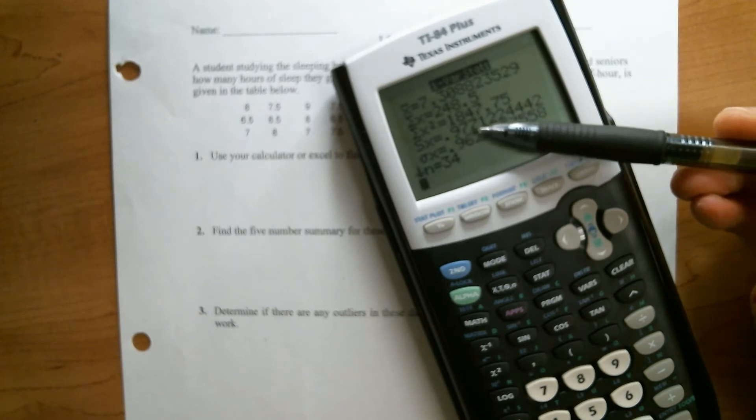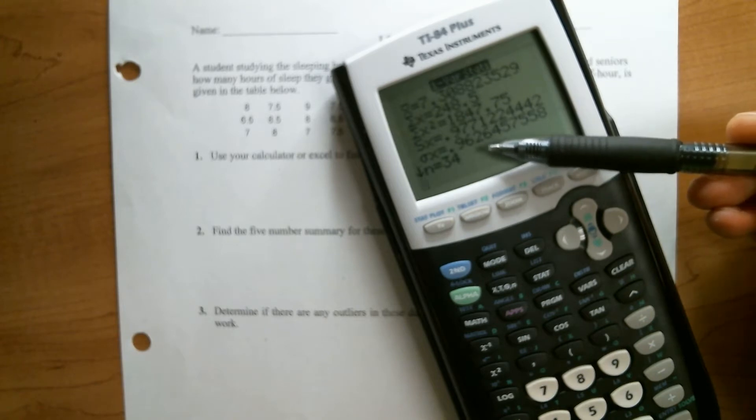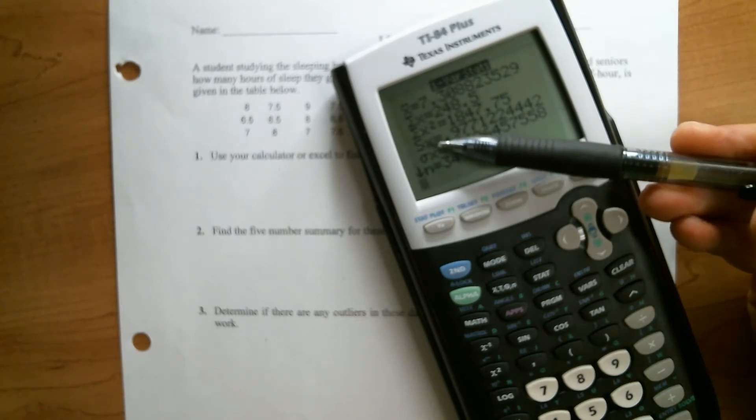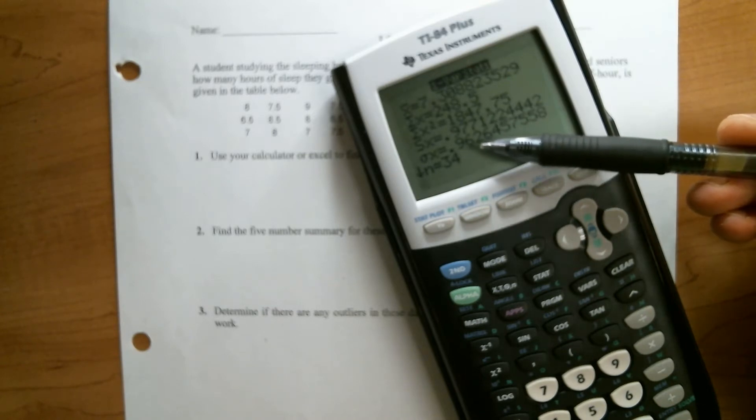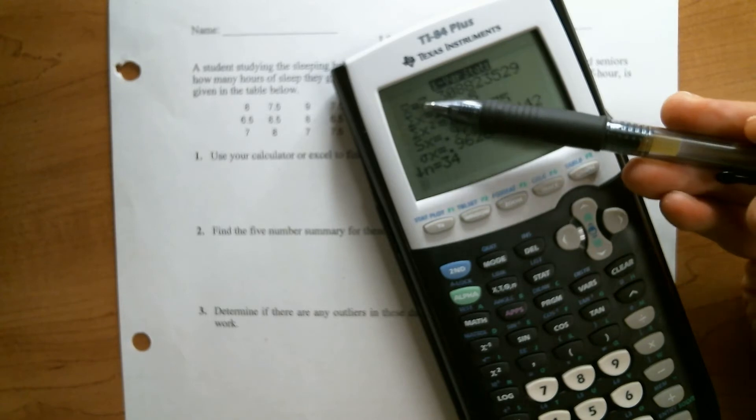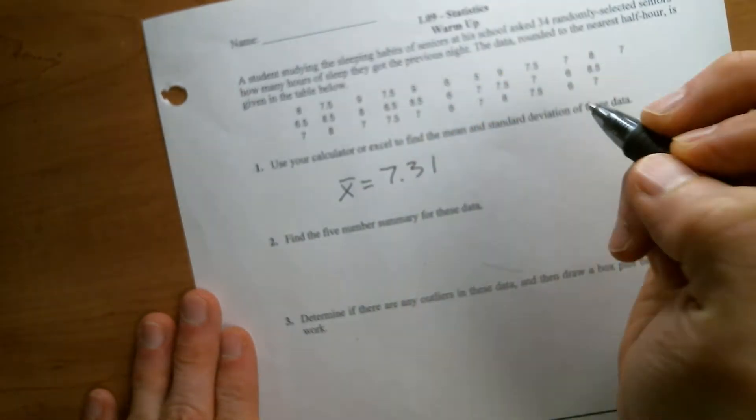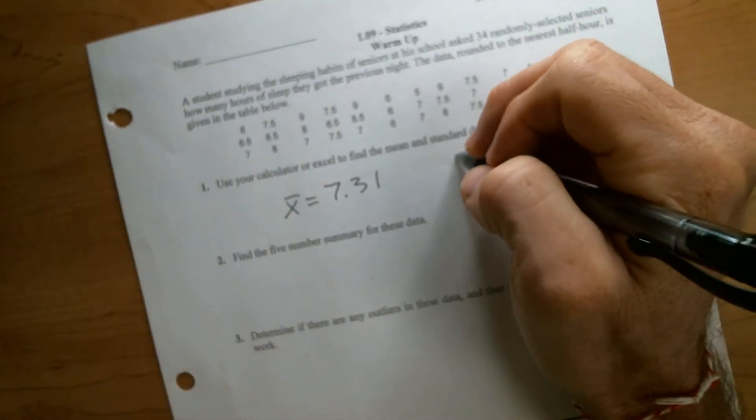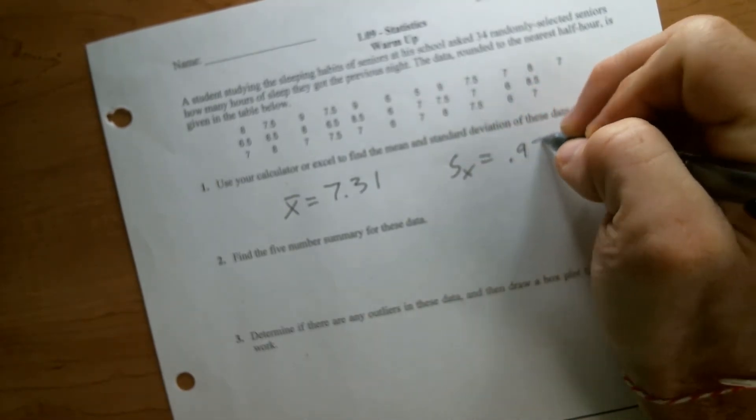Just below that is your population standard deviation. If you don't remember the symbols, try to remember that the sample one should always be larger because we're dividing by n minus one. And the population is always smaller because you're dividing by just n. And up here, x bar is our average. So for this problem, we would say x bar equals 7.31 and standard deviation equals 0.977.